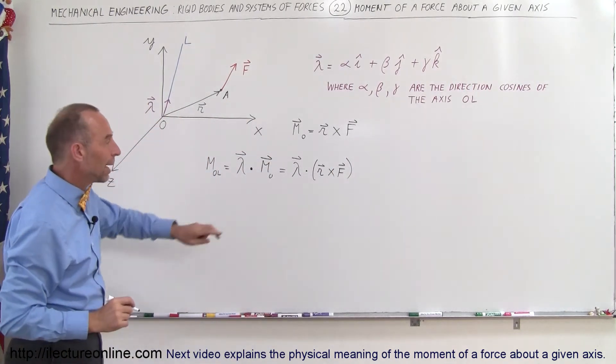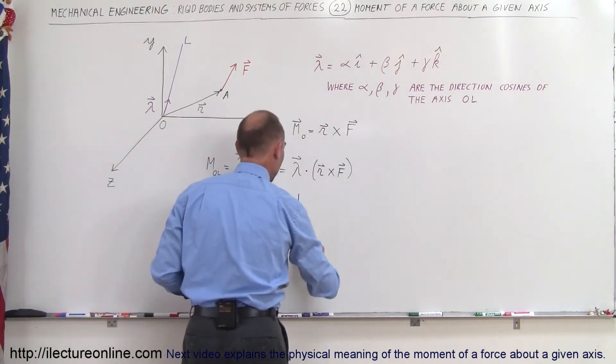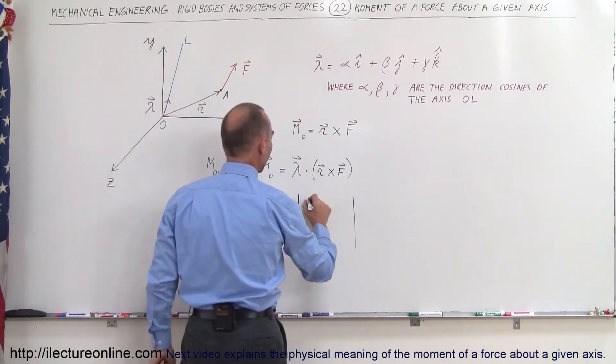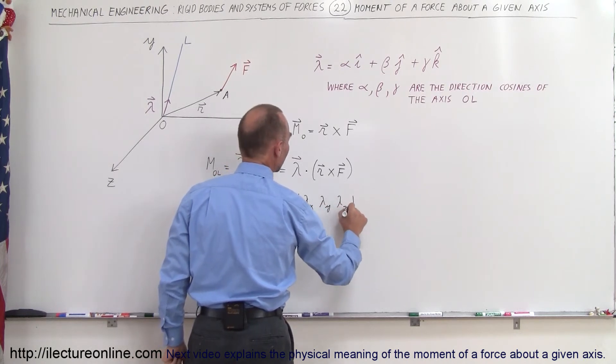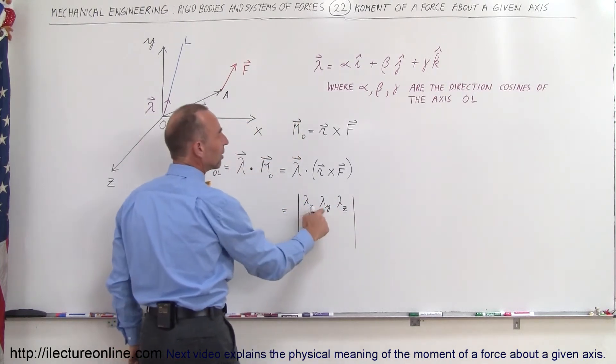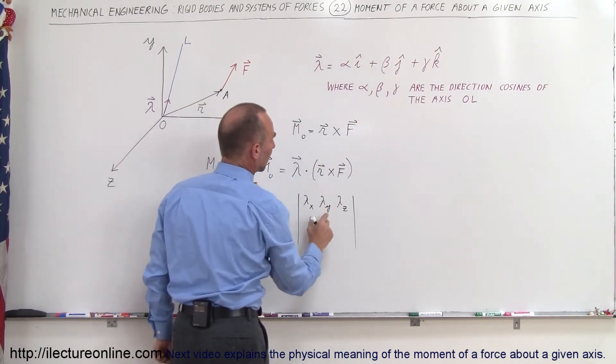We calculate that using the matrix quantity defined by lambda in the x direction, lambda in the y direction, lambda in the z direction. In other words, these are the direction cosines: alpha, beta, gamma.